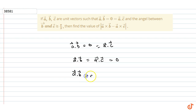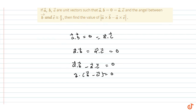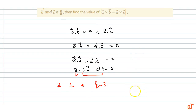Taking a·b minus a·c equals 0, and factoring out a, we get a·(b - c) = 0. This means the vector a is perpendicular to the vector (b - c), because their dot product is 0 — that is, the angle between them is 90 degrees.